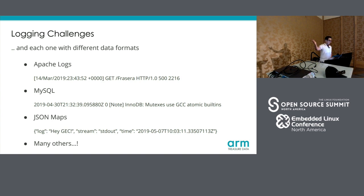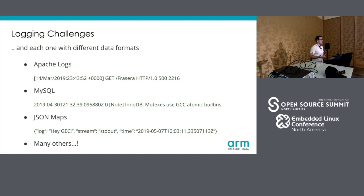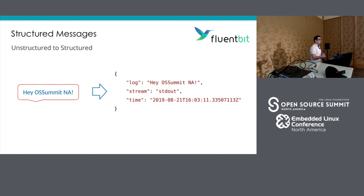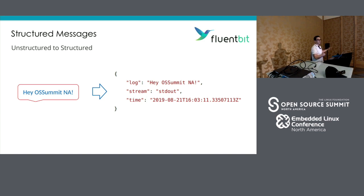If you look at Apache logs, you understand that you have a timestamp, the HTTP method, and all the other information. But if you pass that information to the computer, it's just an array of bytes. If we want to do data analysis over that, we need to process that information, filter it — there is some extra work to be done. A simple message like 'Open Source Summit NA' generates a common message with metadata because that message was also generated at some time — you need a timestamp. It was also generated from some stream. On this case, this is an example from a Docker container — but it's pretty much the same thing. If you send a message from an embedded device, a firewall using Syslog protocol, you will get a timestamp, the host name, and the message.